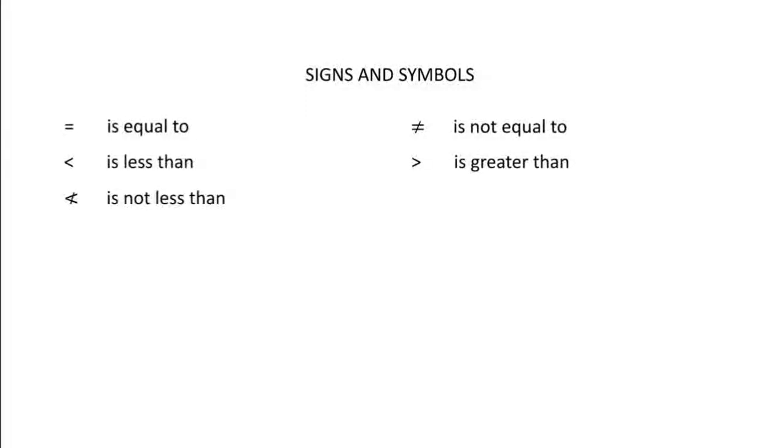So we will learn about the uses of signs and symbols. For example, we know this is an equals to sign. Similarly, if we cancel the equals to sign, that means if we write the equals to sign and then if we cut it this way, then it is called as not equal to. This one is less than sign and this one is greater than sign. Similarly, this will be is not less than sign and this one represents is not greater than.